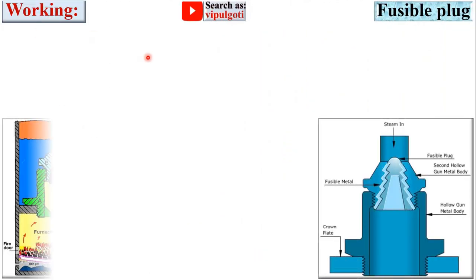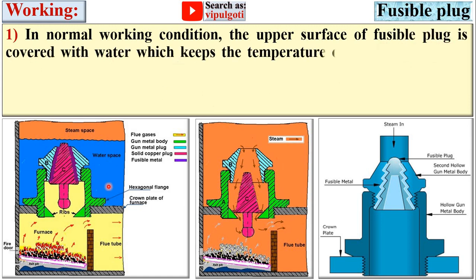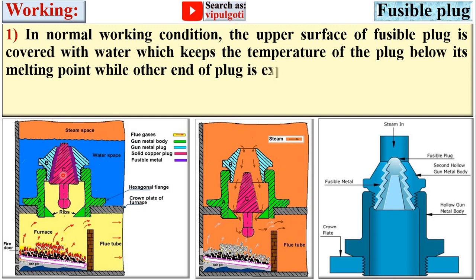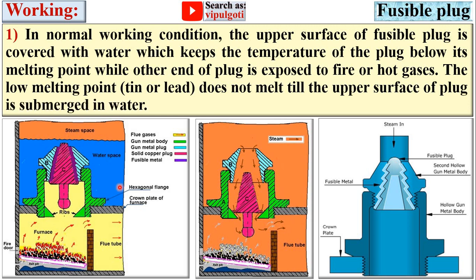Now, working of the fusible plug. In normal condition, the upper surface of the fusible plug is covered with water. This water space keeps the temperature of the plug below its melting point, while the other end of the plug is exposed to fire or hot gases. So one end is connected to the water space and the other end is connected to the fire, or furnace. The low melting point material — that means tin or lead — does not melt as long as the upper surface of the plug is submerged in water.